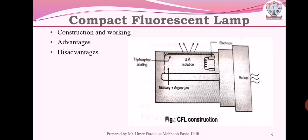The flow of electrons is produced by an arc between two electrodes at the end of the tube. The ballast provides the high initial voltage required to create the starting arc and then limits the current to prevent the lamp from self-destruction.